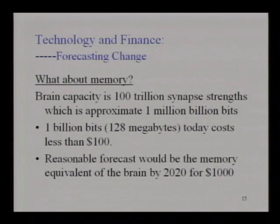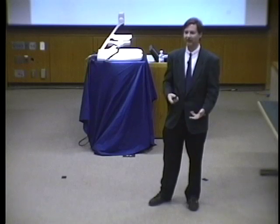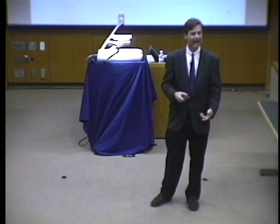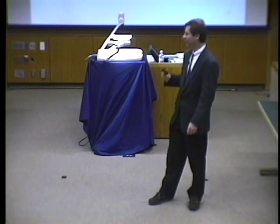We go through the same exercise with memory. How long will it take, given current technology and some extrapolation, to get the memory of the human brain for $1,000? It turns out about 2020. There's a lot of scientific evidence supporting the analysis of how much memory we've got right now and the forecast going forward. So it's not just raw computing power — it's also memory. I was quite surprised at how much memory the brain actually contains.